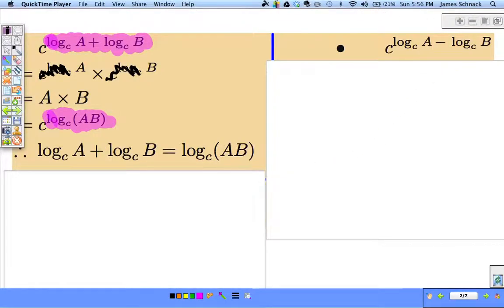Now, let's look at the second one. We're going to start with C to the log C A minus log C B. Why don't you try and prove this? Why don't you get this down to a statement like this? Let's show that this is equal to C to the log A divided by B. So pause the video and give it a try.